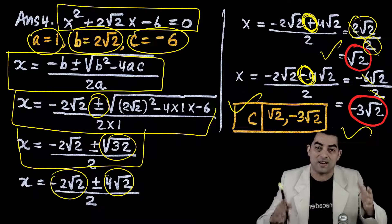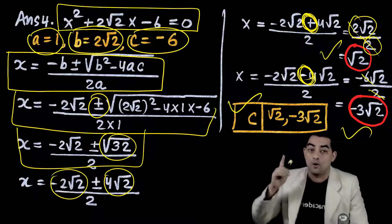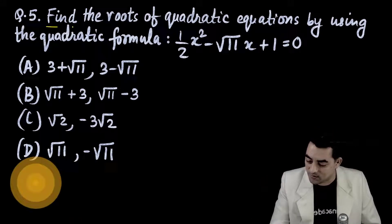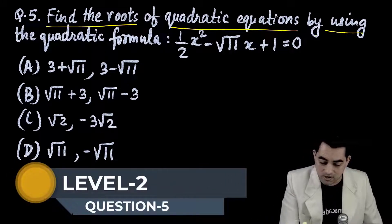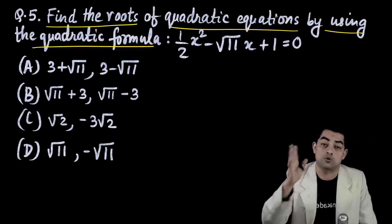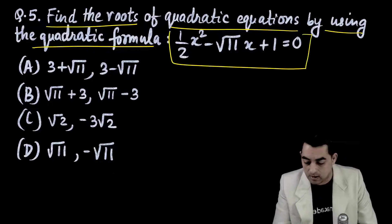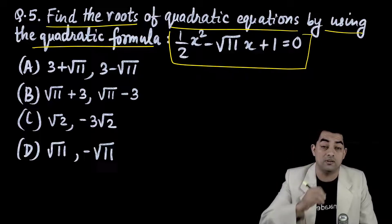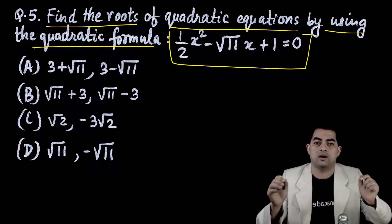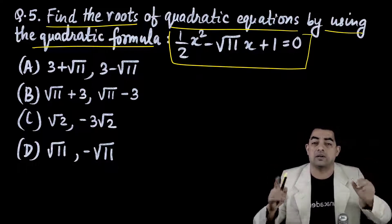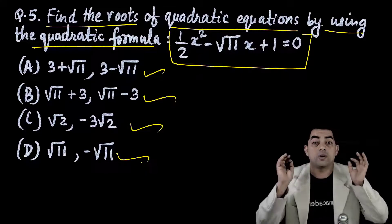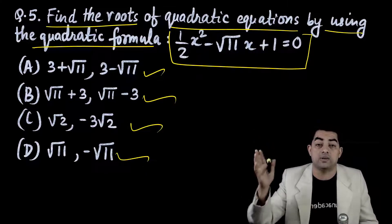Question number 5: find the roots of ½x² - √11·x + 1 = 0 using the quadratic formula. Both roots and fractions are involved — don't give up! Pause the video, solve it, then check your answer. a = 1/2, b = -√11, c = 1.